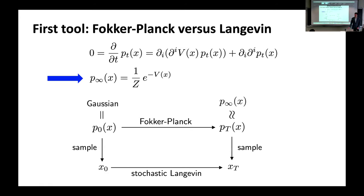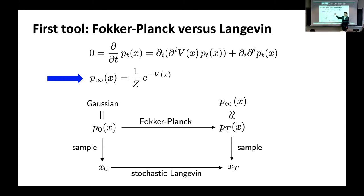Suppose that v(x) is some function of your choice, and your desire is to sample from this distribution. Something you could do is start with a Gaussian distribution, which you do know how to sample from efficiently. You could then sample from it, evolve it by the stochastic Langevin equation, and if you evolve it for long enough, you'll approximately get a sample from the infinite-time distribution — which is the same as sampling from e to the minus v(x). So if you have a particular v(x) in mind, this gives you an efficient algorithm for sampling from that distribution.